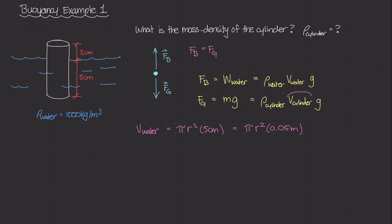Now for the volume of the cylinder: that is also pi r squared times the depth, but in this case the depth is the entire cylinder — 7 centimeters — because the entire cylinder contributes to its weight F sub G. Converting: V sub cylinder equals pi r squared times 0.07 meters. So we now have both volumes, and we also have the mass density of water given as 1,000 kilograms per meter cubed.